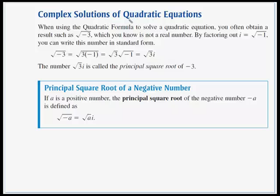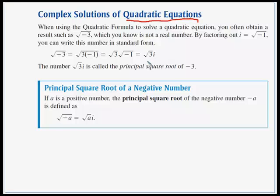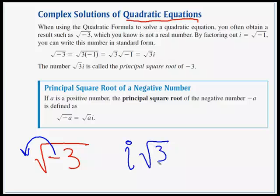Now we'll talk about complex solutions to quadratic equations. When using the quadratic formula, you often get a result like the square root of negative 3, which is not a real number. By factoring out i, the square root of negative 1, you can write it in standard form. The key shortcut: if you have a negative under your radical and want to factor it out, that negative immediately jumps out and turns into i. So the square root of negative 3 becomes i times the square root of 3.